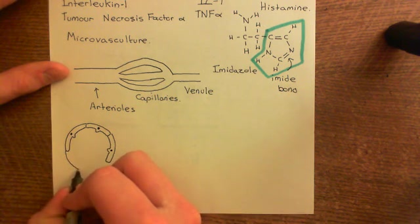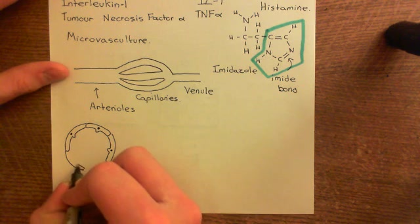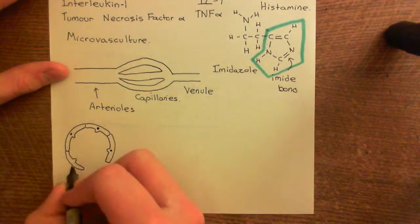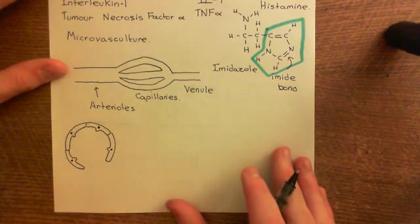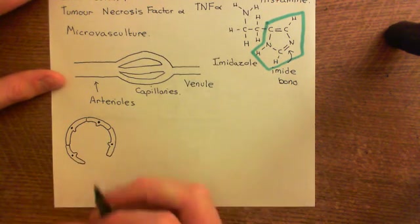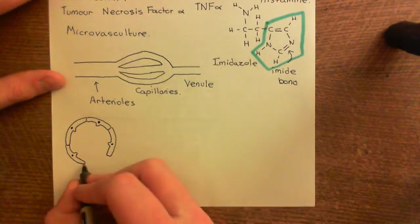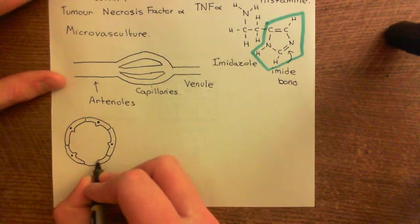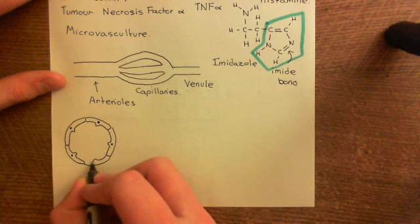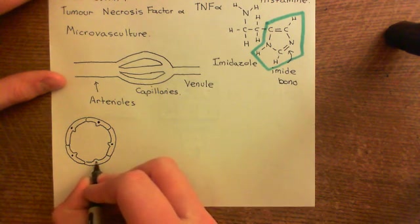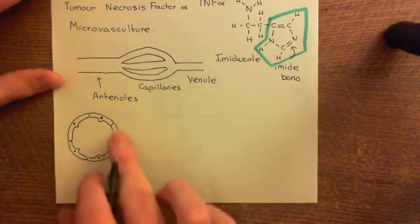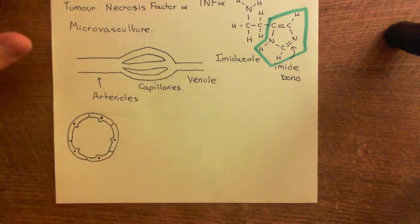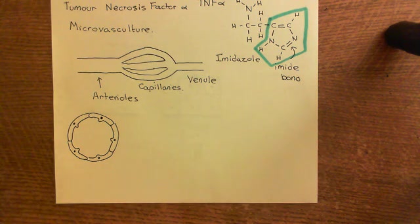This is an arteriole, and I hope this stresses how small these arterioles are, because these are whole cells. There are around five cells making up the circumference — these are whole cells, so this is a tiny, tiny structure.